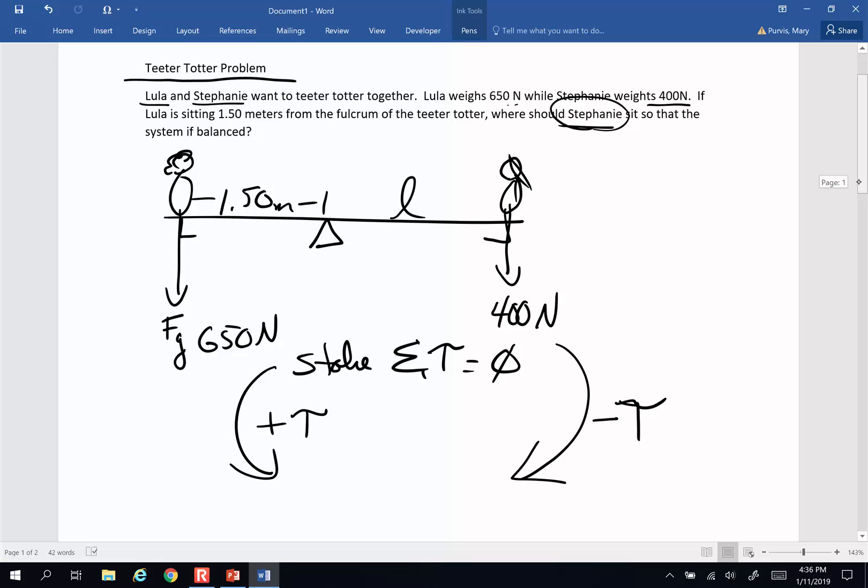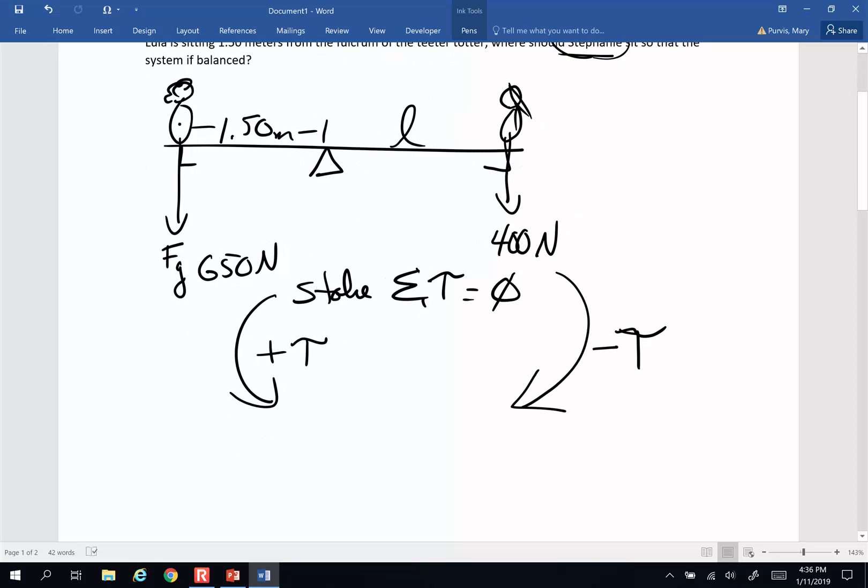So for every object that is making the system pivot, they get their own force times lever arm. So, the force provided by Lula times the lever arm of Lula are going to be equivalent to the force provided by Stephanie times the lever arm of Stephanie.